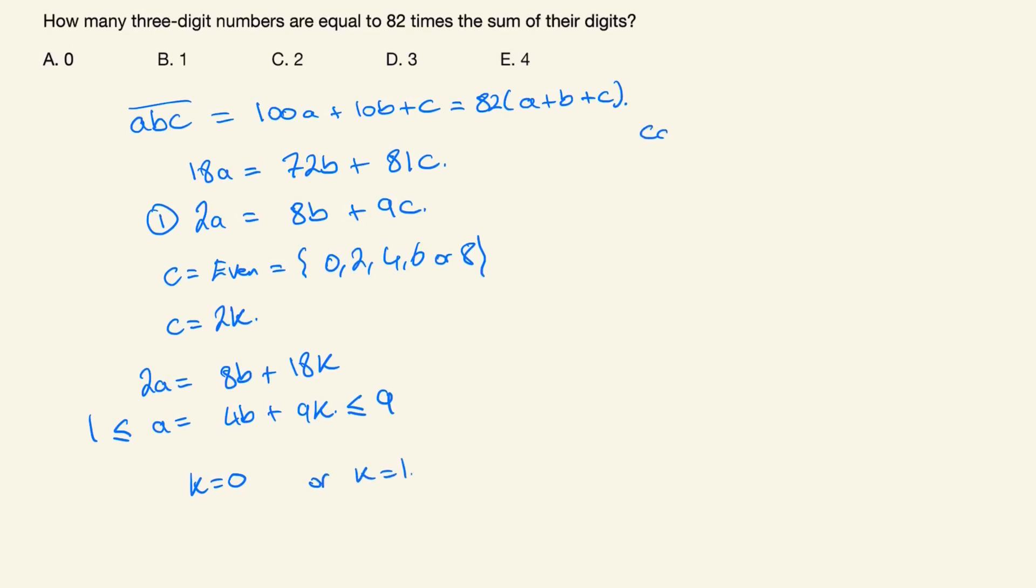If we consider case 1 to be when K equals 0, then C which is 2 times K would be 0, and A which is 4B plus 9K would just become 4B. This A would lie between 1 and 9, and therefore we have two possible solutions for B.